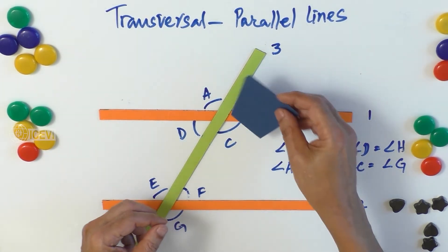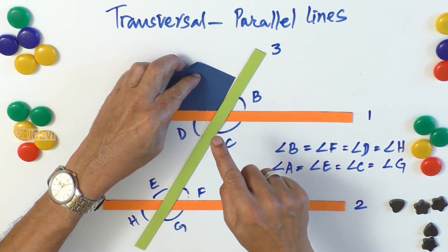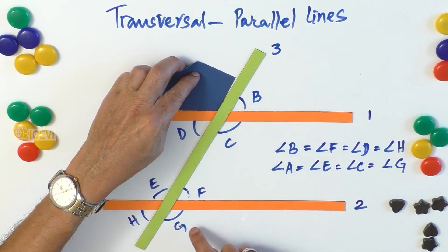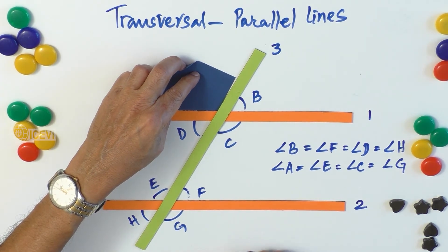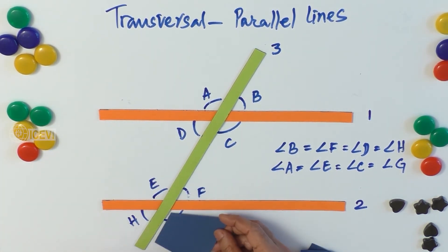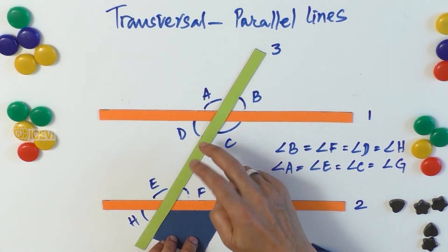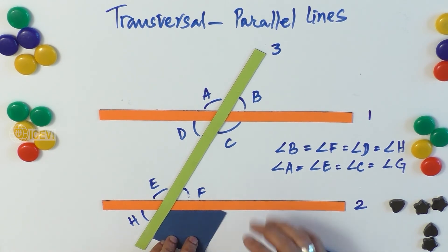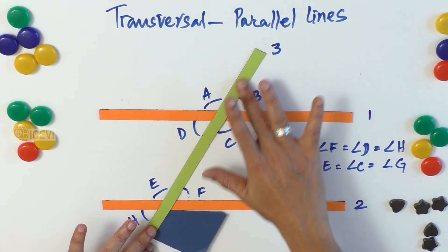For example, take exterior angle A — its alternate exterior angle is G, since both A and G are exterior angles beyond the parallel lines, not between them. We can notice that A equals G. So to summarize: the alternate interior angles are equal, the alternate exterior angles are equal, and the corresponding angles are equal when the lines are parallel and a transversal cuts through them.